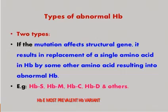Examples of this type of mutation occur in the case of hemoglobin S, otherwise known as sickle cell hemoglobin, hemoglobin M, hemoglobin C, hemoglobin D, and others. Hemoglobin E is the most prevalent hemoglobin variant.